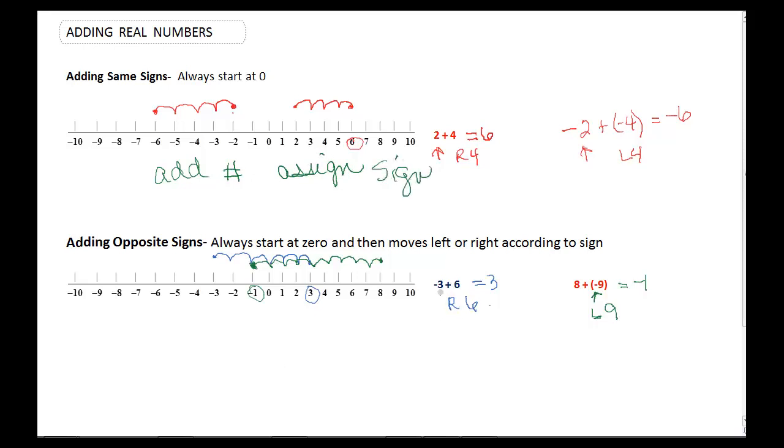If you have opposite numbers though, we have negative 3 plus 6, so it's really kind of like taking the 2 numbers and subtracting them. So subtract. They say it's the absolute value of the numbers, of each number, and then assign the sign on the larger.